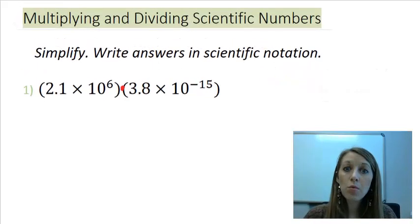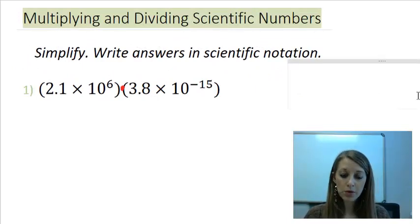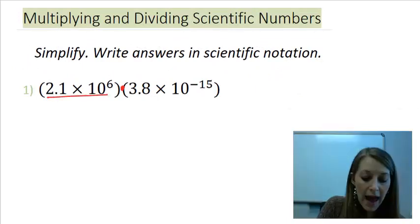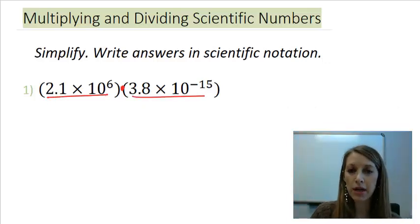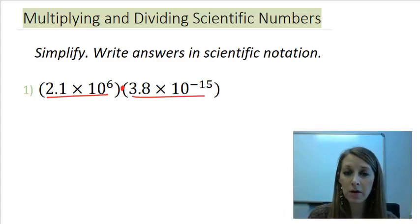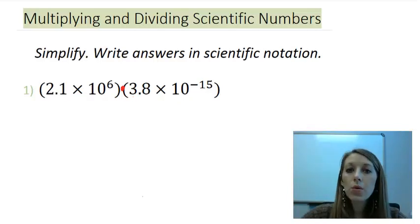Starting with example one, the more complicated way to do this is to convert it into decimal notation. I could write out what this number is and what that number is, but that makes it very difficult to try and multiply without using the calculator, and we want to be able to do as much as we can without the calculator.